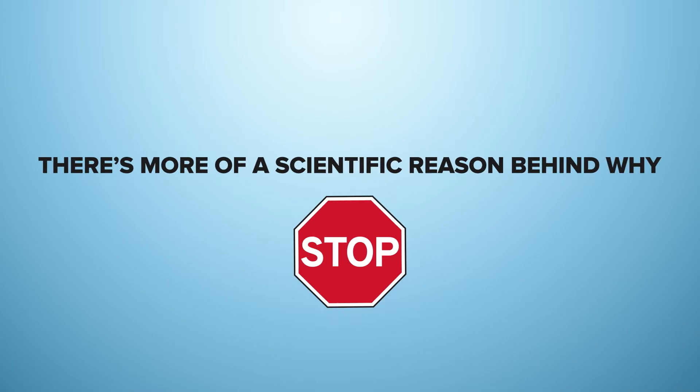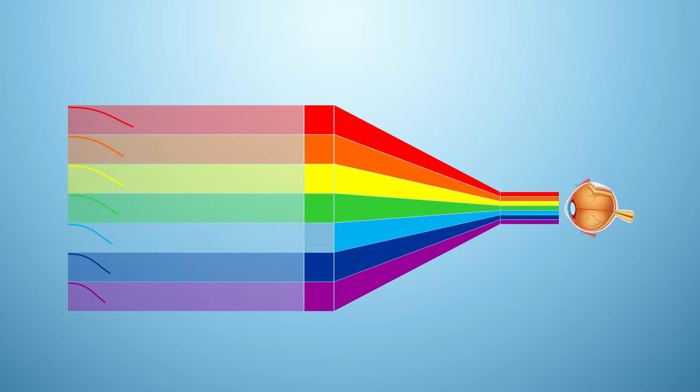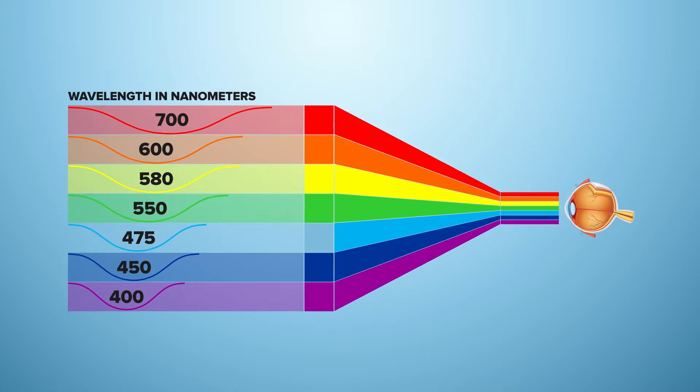However, there's more of a scientific reason behind why stop signs are red. If you look at the visible light spectrum of the human eye, red has the highest wavelength. Thus, it is the least affected by air particles. Essentially, what this means is that red is the easiest color to see from a distance in conditions like fog, rain, and snow.